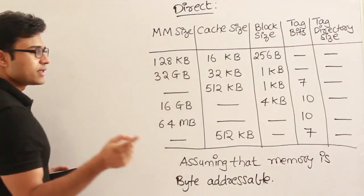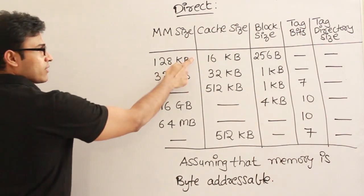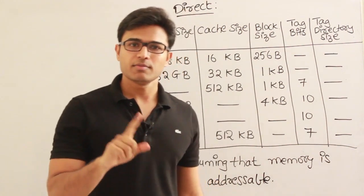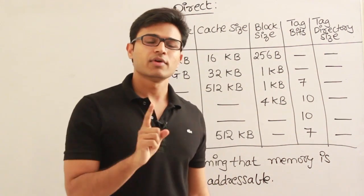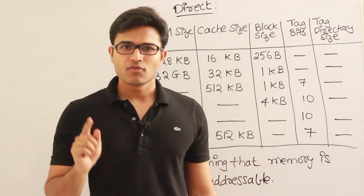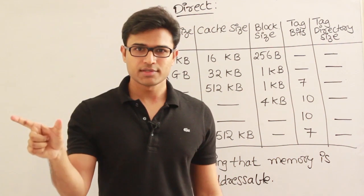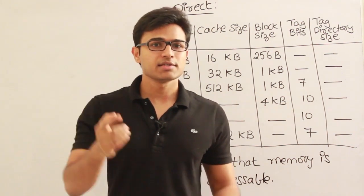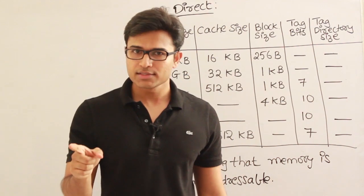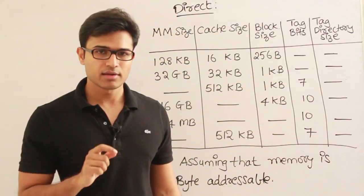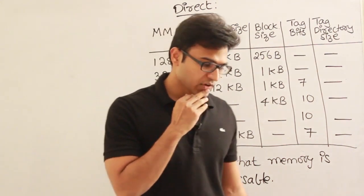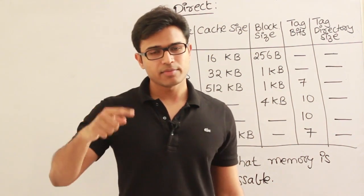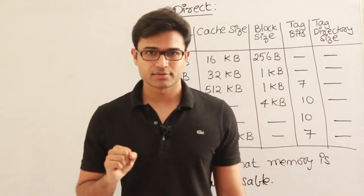In case it is word addressable and a word is two bytes, you first convert to words and then find the physical address. The main difference between word addressable and byte addressable: if the address bits are given, take two-to-the-power of that to get the main memory size in words, then multiply by bytes per word. If the main memory size and word size (e.g., four bytes) are given, convert to words first, then find the physical address.